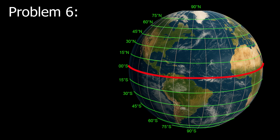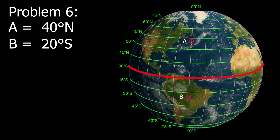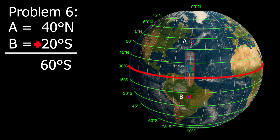Example number 6: Point A, 40 degrees north. Point B, 20 degrees south. Since the points are in different hemispheres, we add them together: 40 plus 20 equals 60. The vessel is moving south. Therefore, the D-lat is 60 degrees south.